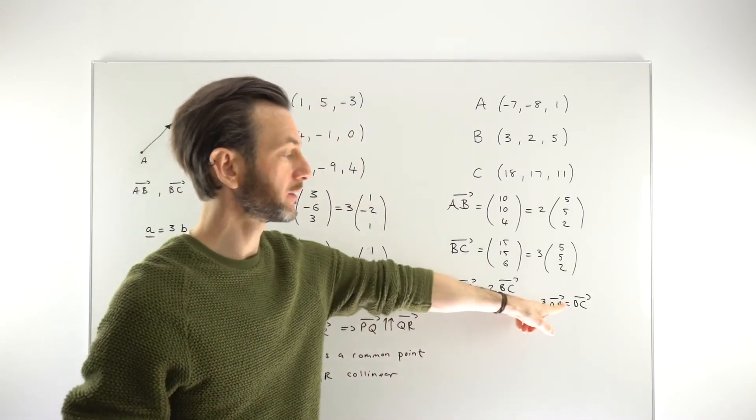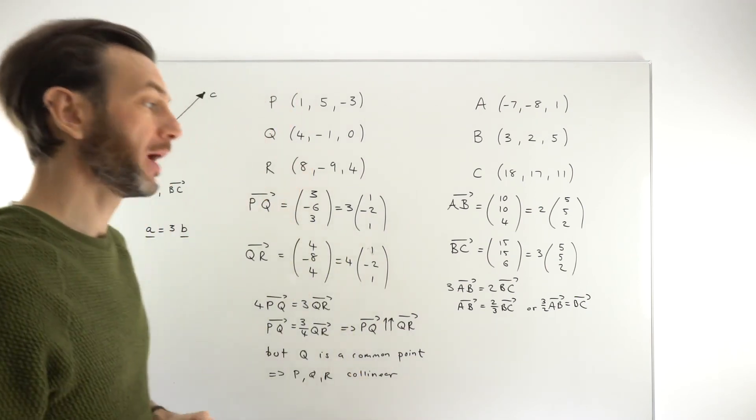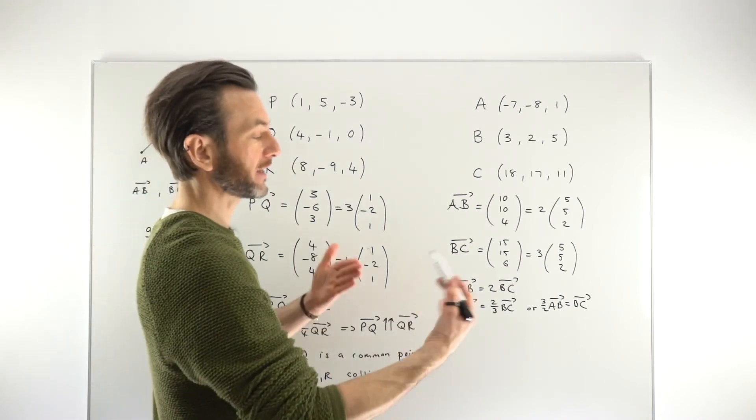And then again, you would just finish this off by saying the vectors are parallel, but B is a common point. So that's your middle point, the one that joins the two vectors together.